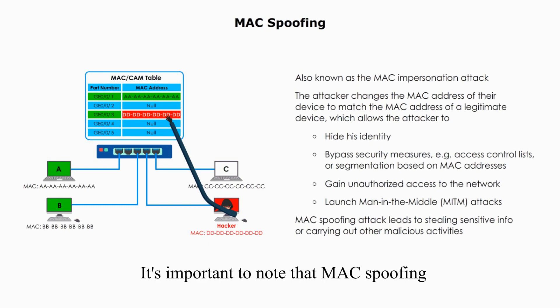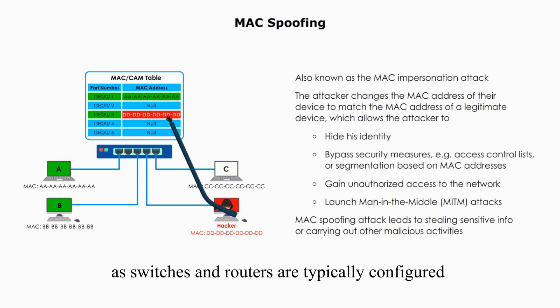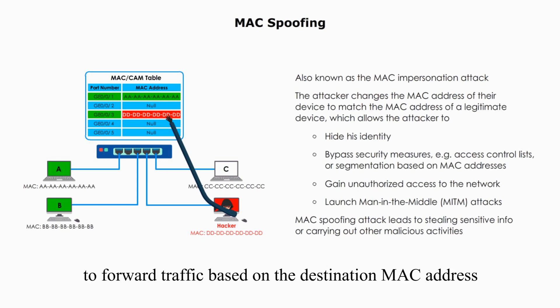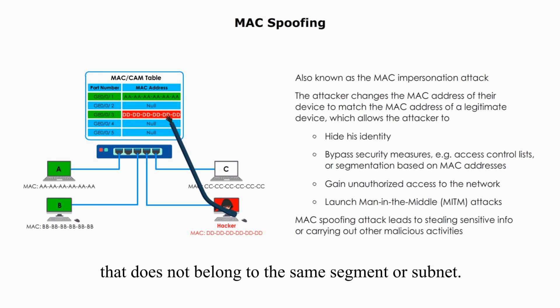It is important to note that MAC spoofing is generally not effective across different network segments or subnets, as switches and routers are typically configured to forward traffic based on the destination MAC address, and would not forward traffic to a device with a MAC address that does not belong to the same segment or subnet.